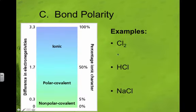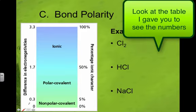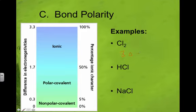So chlorine has a value of 3.0. So if I have two chlorine atoms here, that's going to be 3.0 minus 3.0, which is 0. So this should be nonpolar.